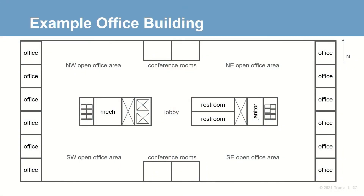To help illustrate how this works, here's a single floor layout from a multiple story office building. In addition to a lot of open plan office space, there are private offices along the eastern and western exposures, four conference rooms on the northern and southern walls, and the western core area includes a stairwell, mechanical room, and elevators. The eastern core includes restrooms, a janitor's closet, and stairwells. The total floor area is 23,000 square feet.